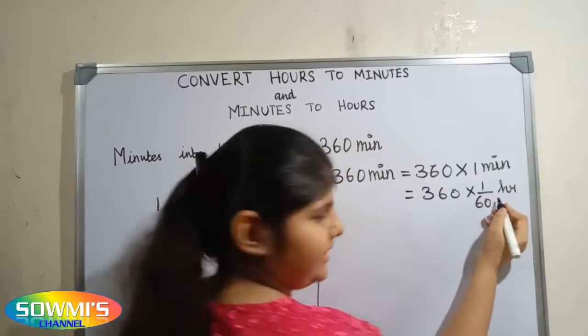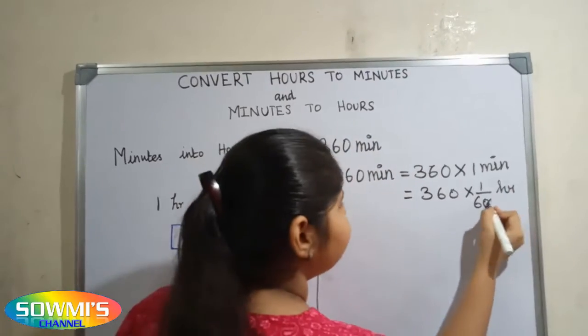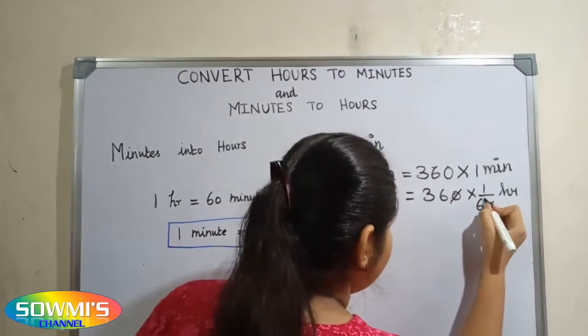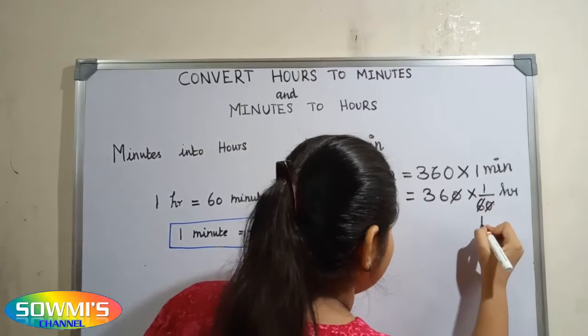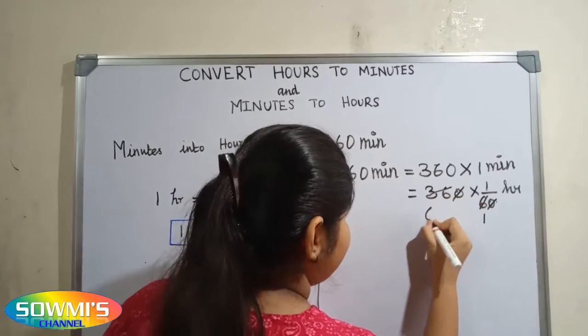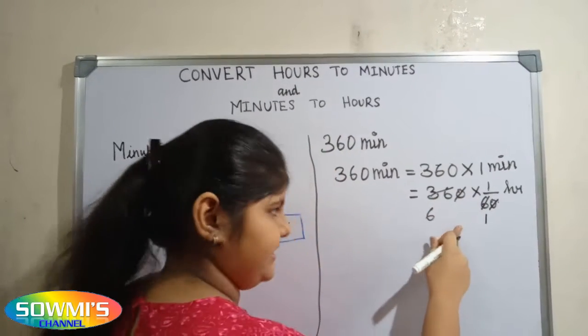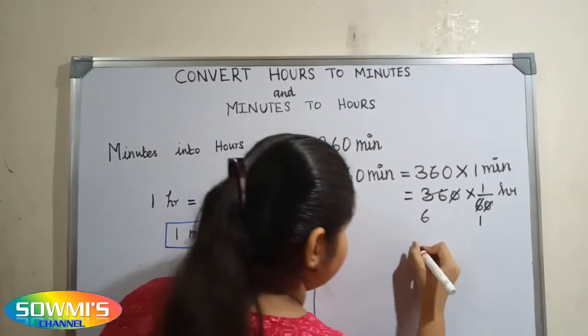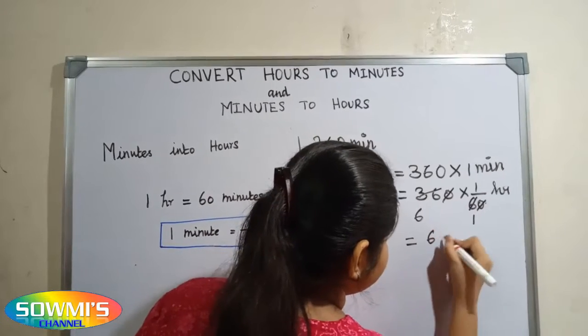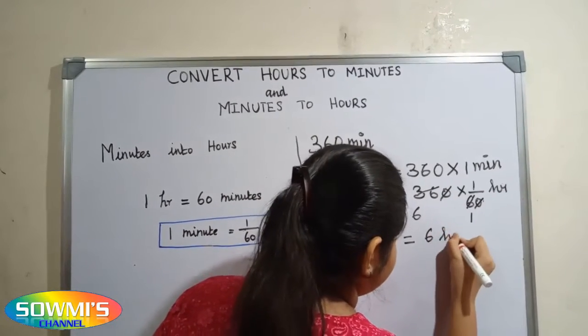Here the zeros get cancelled. 360 divided by 60: 6 ones are 6. So the answer is 6 hours.